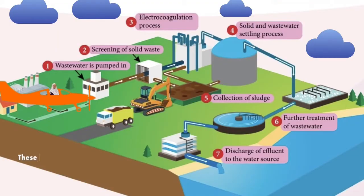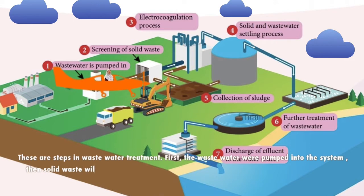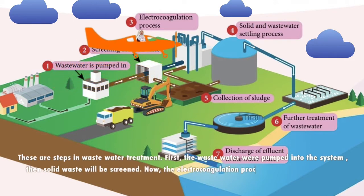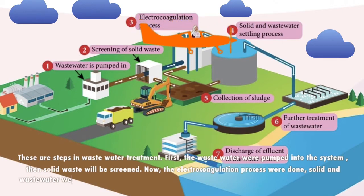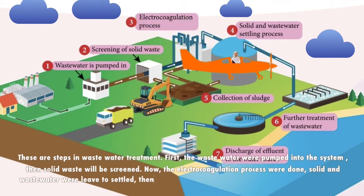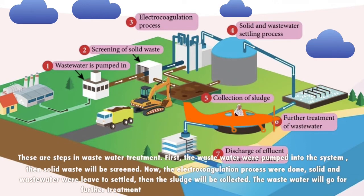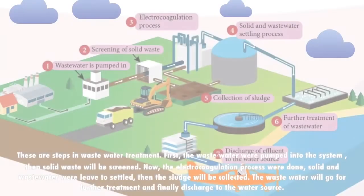These are the steps in wastewater treatment. First, the wastewater is pumped into the system. Then, solid waste is screened. Next, the electrocoagulation process is carried out. Solids and wastewater are left to settle. Then, the sludge is collected. The wastewater goes for further treatment, and finally, it is discharged to the water source.